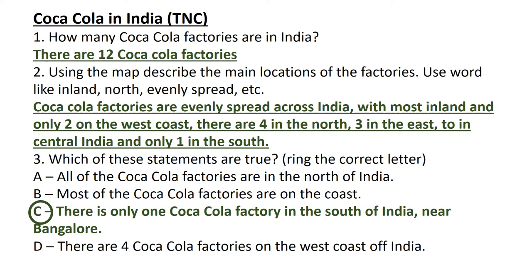The multiple-choice question at the bottom: work through it and cross out wrong answers. Option A — all factories are in the north — is wrong because there are others in the west, east, and south. Option B — most are on the coast — is wrong because only two are on the west coast. Option C — there is only one factory in the south near Bangalore — is correct, you can clearly see just one right at the bottom. Option D — there are four in the west — is wrong, there are only two. So the answer is C.